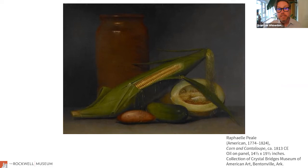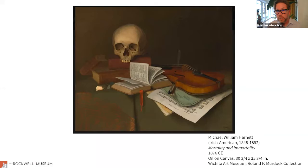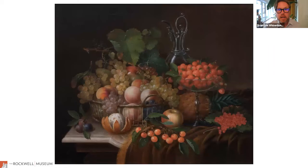Later in the 19th century, artists like Peto and William Michael Harnett were known for employing very high skill to deliver trompe l'oeil paintings showing still life as incredibly realistic objects. This is Harnett's Mortality and Immortality, which falls within the memento mori category — a reminder of our own mortality, but also reminding us of lasting things: a book, music, the things we create as people that have more longevity than our lives.